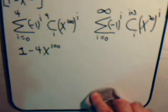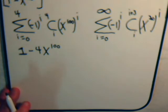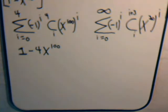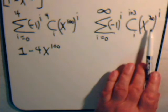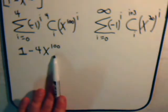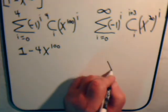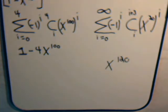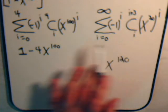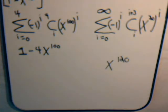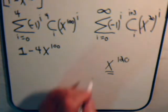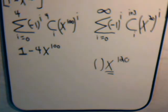We're almost at the end of the problem, so rather than rush through and make a mistake, let's stop the video here. What we're going to do in the next video is pick up from this point and ask: what values must the x exponents have from the infinite series so that when we multiply, they add up to give us x to the 120? We're only interested in hunting down those terms involving x to the 120 to find that coefficient. Come back and join us and let's get this problem wrapped up.